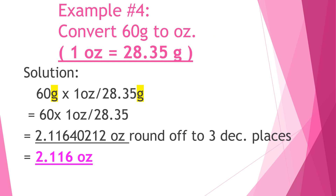Example number four: Convert 60 grams to ounces. 1 ounce is equal to 28.35 grams — this will be our conversion factor. To solve: 60 grams times 1 ounce over 28.35 grams. 60 divided by 28.35 gives you 2.11640212 ounces. Rounded off to three decimal places, the answer is 2.116 ounces.